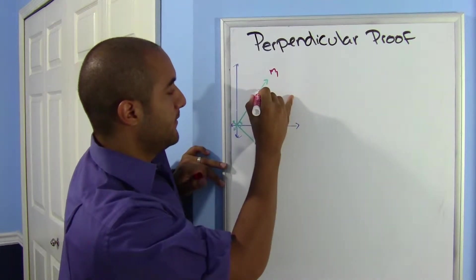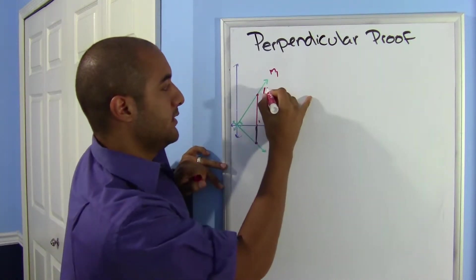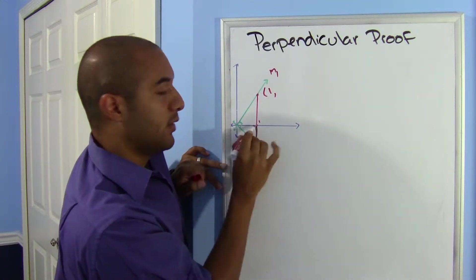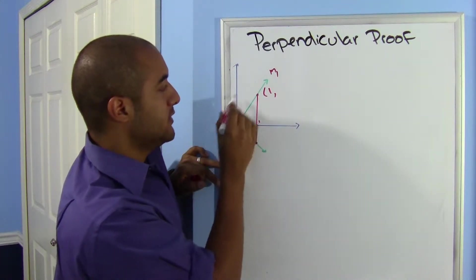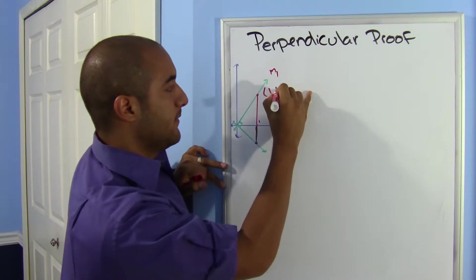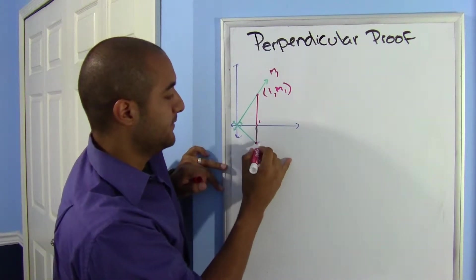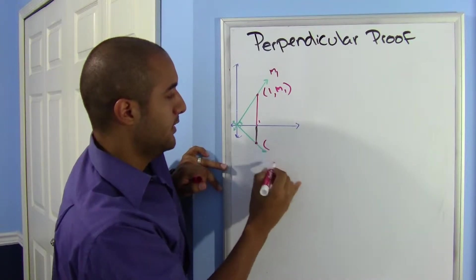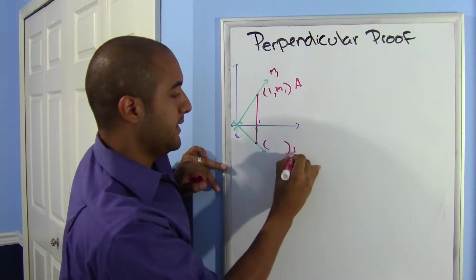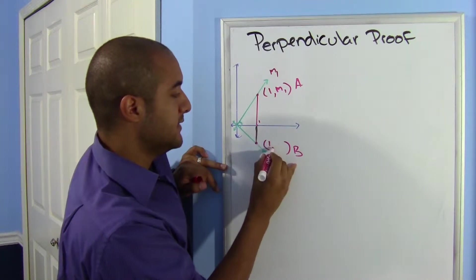Now since they're intersecting at the origin, whatever slope this is, m1, when you use it to follow this line, this point will be one, because remember I want one distance, and using the slope, whatever the slope is, that's my y. Same thing here, we'll say this is point A, this will be point B.